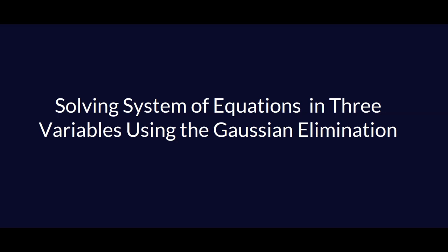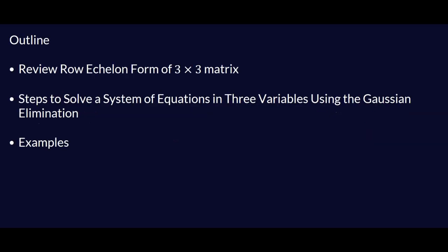Let's learn how to solve systems of equations in three variables using the Gaussian elimination method. We're going to start by reviewing the row echelon form of a three-by-three matrix, then I'll show you the best steps you need to master to solve this type of system, and then we'll apply this to solve some examples together.